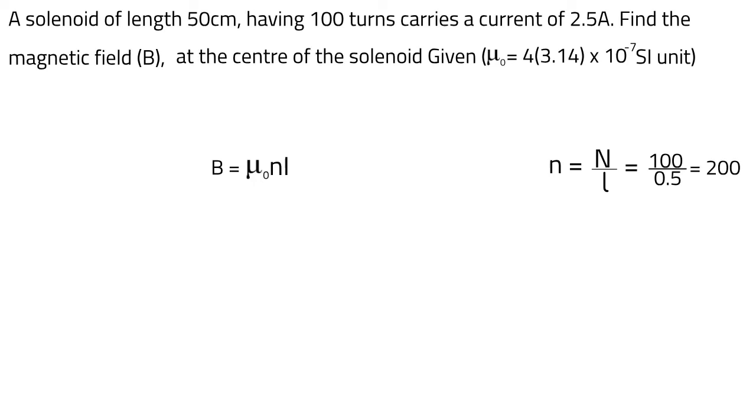Using the values of μ₀ and I in the equation, we get B = 4 × 3.14 × 10⁻⁷ × 200 × 2.5, which equals 6.28 × 10⁻⁴ Tesla.